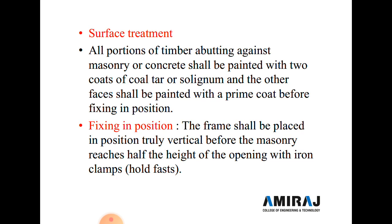For surface treatment, all portions of the timber abutting against masonry or concrete shall be painted with two coats of coal tar or solignum. Other faces shall be painted with a prime coat before fixing in position. Sometimes bitumen is also used as a surface treatment for the frame.